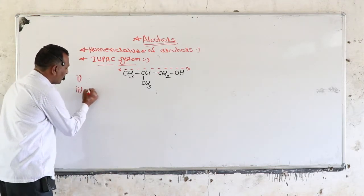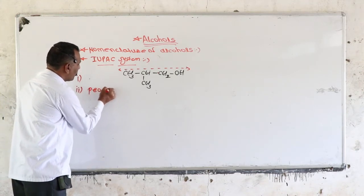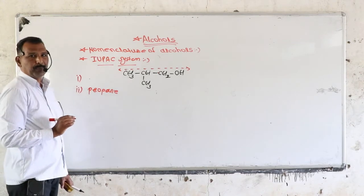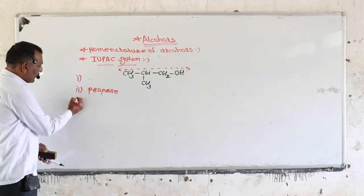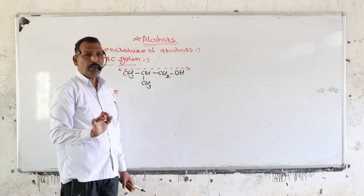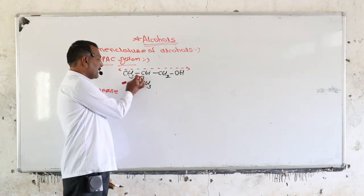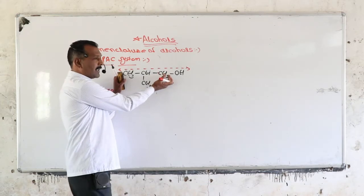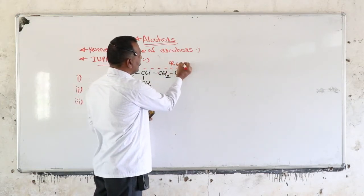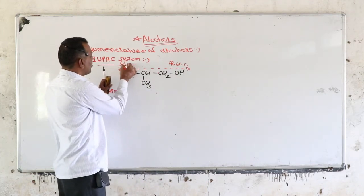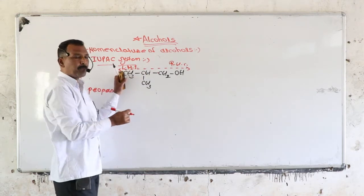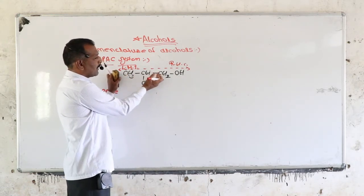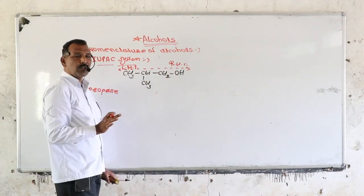Next rule: we have to number the parent chain. While numbering, consider the right-hand side and left-hand side. From the right-hand side (RHS) the hydroxyl group is present on carbon number 1, and from the left-hand side (LHS) it is present on carbon number 3. So it is nearer from the RHS. Therefore, number from the RHS: 1, 2, 3. You have to number from that end to which the hydroxyl group is nearest.